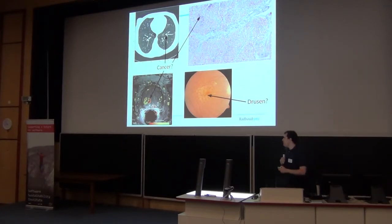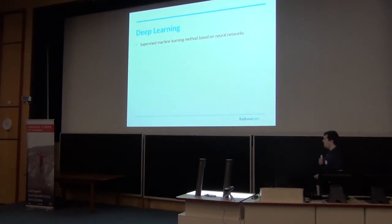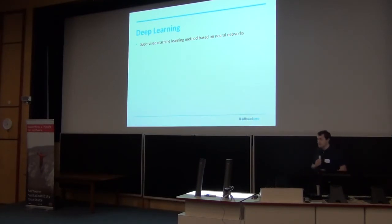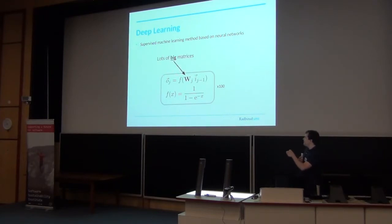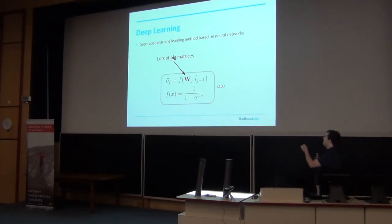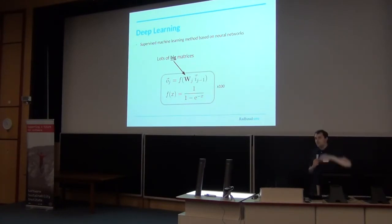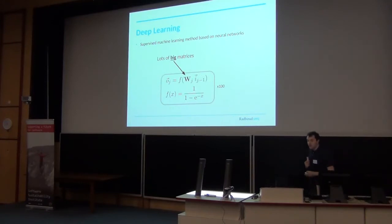But then, about three years ago, deep learning became very popular, and it actually outperforms most of the classical methods nowadays. It's more or less another supervised machine learning technology, but based on neural networks. It consists of equations involving weight matrices W, and there are typically a lot of them. The added advantage of deep learning is having many neural network layer stacks, which means you need quite a lot of computation power to actually train these models.